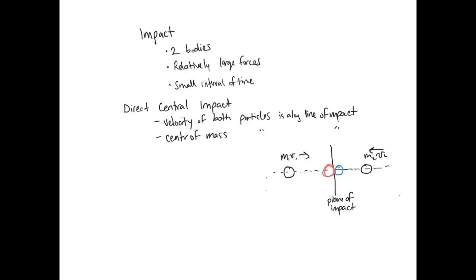An example of not direct central impact would be: let's say we had a particle coming from here, and both particles collided at this point, but the yellow particle was coming in at an angle. That is not direct central impact, so we won't be dealing with that in this course.